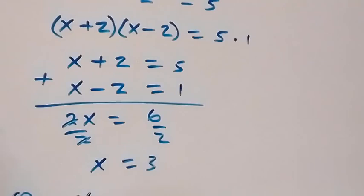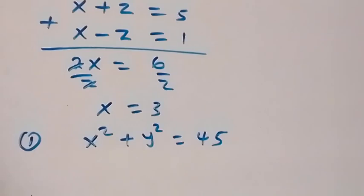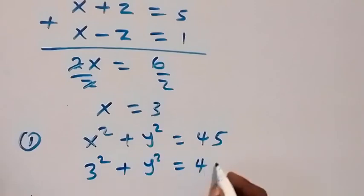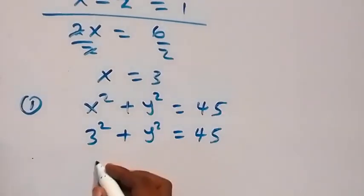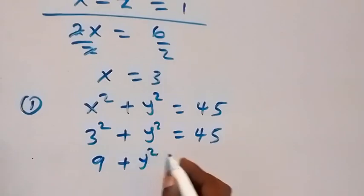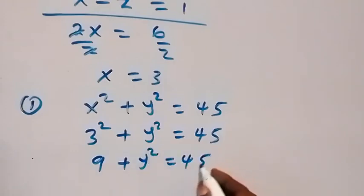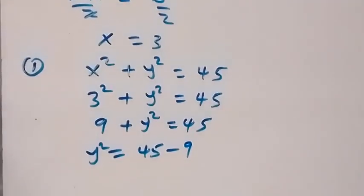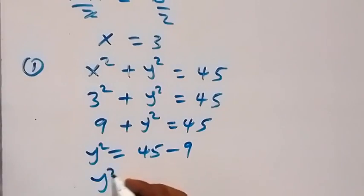From equation 1 we can get y. We have x squared plus y squared equals 45. Substituting x equals 3, we get 3 squared plus y squared equals 45. Since 3 squared is 9, we have 9 plus y squared equals 45. Taking 9 to the other side, y squared equals 45 minus 9, which gives us 36.